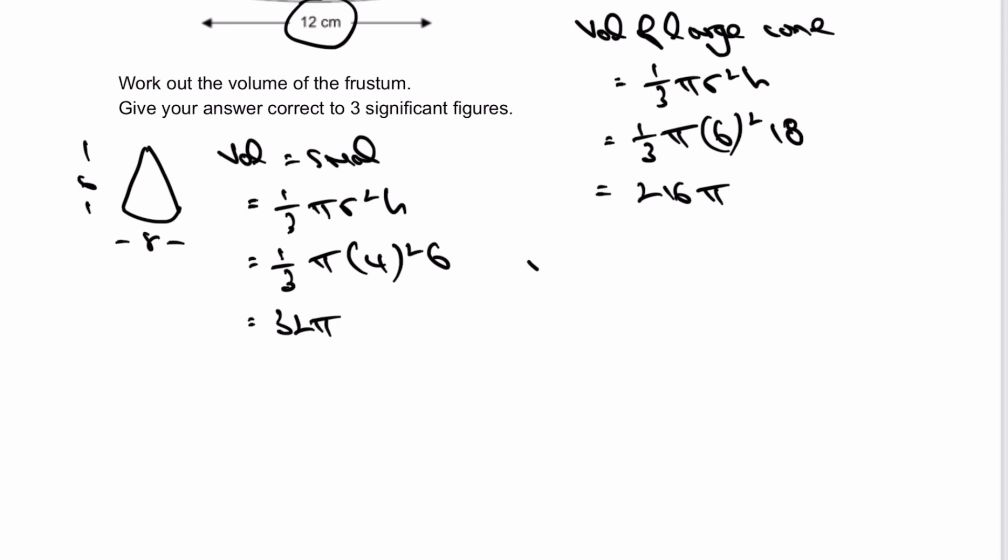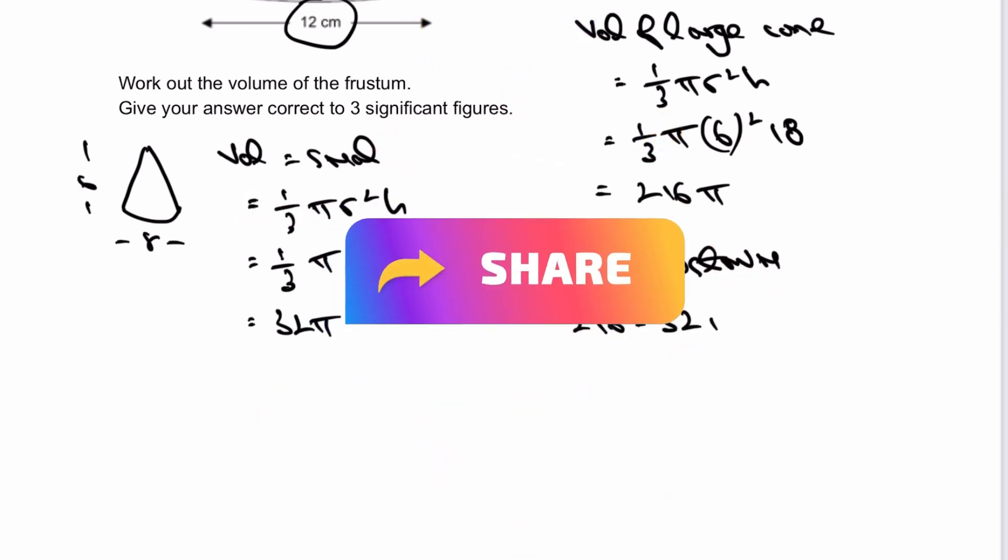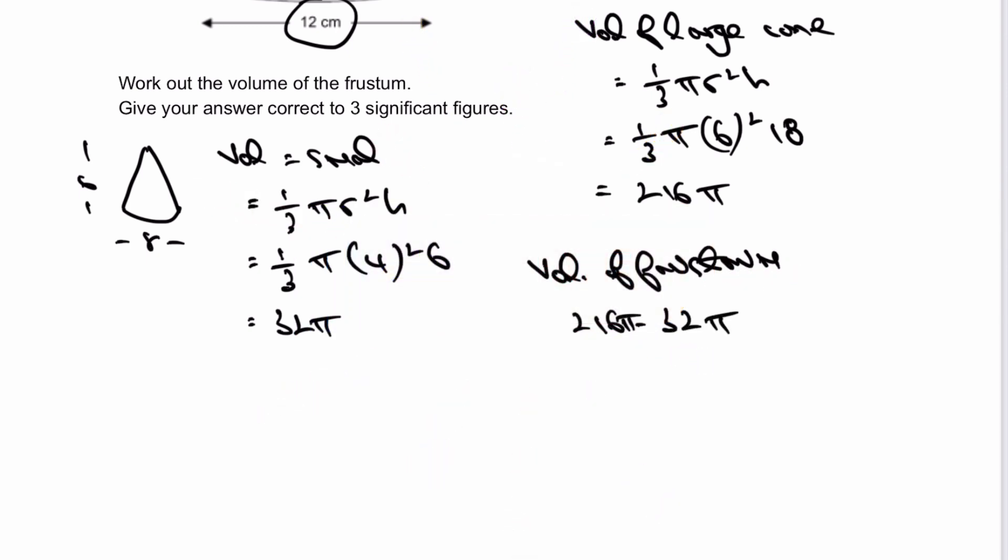To find the volume of the frustum, it's the volume of the large cone take away the volume of the small cone. So volume of frustum equals 216π minus 32π, which equals 184π.